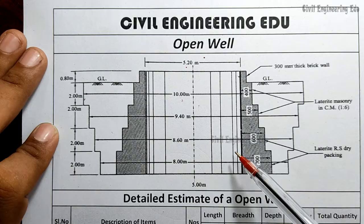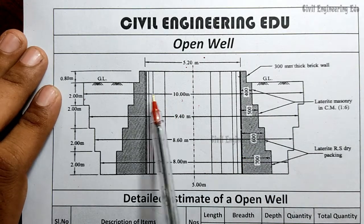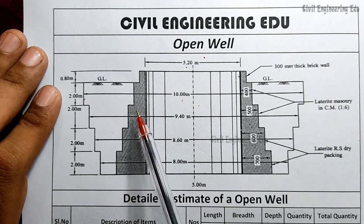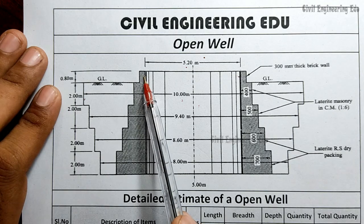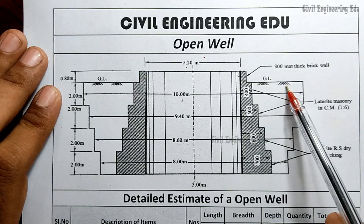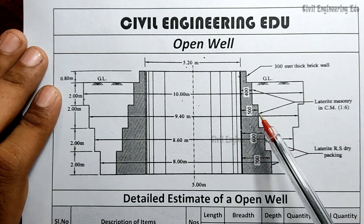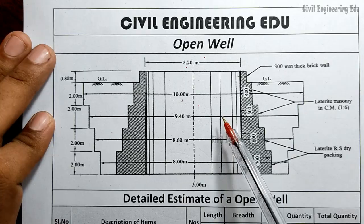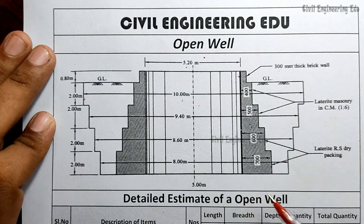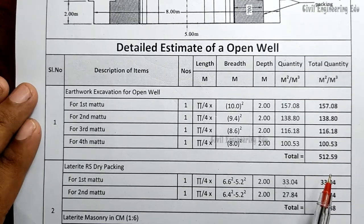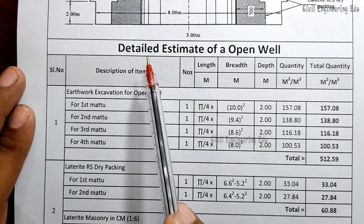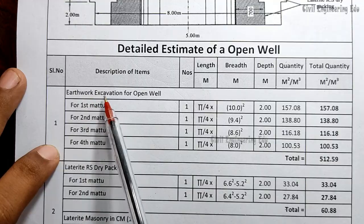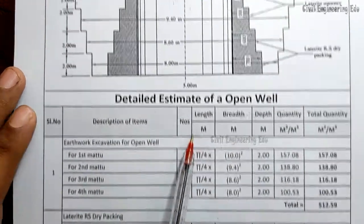These are the diameters at each stage — excavation diameter for steps one through four and masonry steps one through four. So step-wise digging, step-wise construction, and step-wise refilling is the procedure. Now we will see the estimation part. In the detailed estimate of an open well, the first item of work is earthwork excavation.